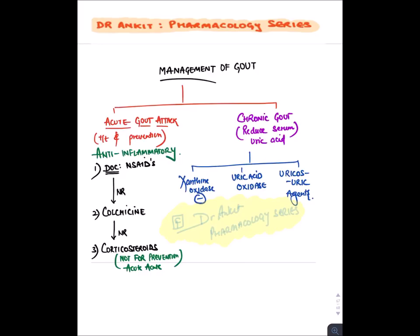If NSAIDs are not responsive, we give colchicine. Colchicine and NSAIDs are given for both treatment and long-term prevention of gout. If there is still resistance, we can give corticosteroids, but corticosteroids are only given for acute attack of gout — we don't give them long-term because they cause Cushing syndrome. For chronic gout treatment, we need to reduce uric acid levels in the blood. We have three kinds of drugs: xanthine oxidase inhibitors, uric acid oxidase enzymes, and uricosuric agents.